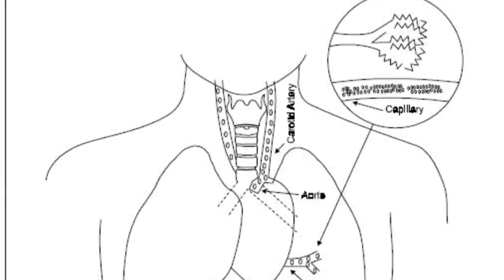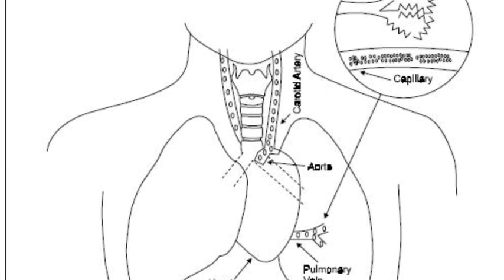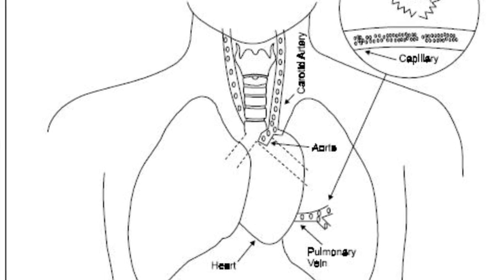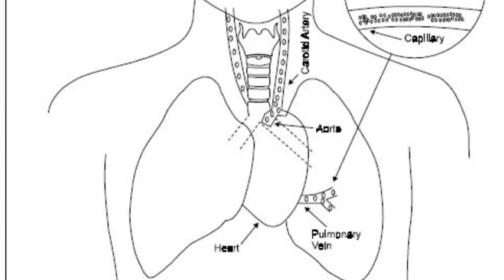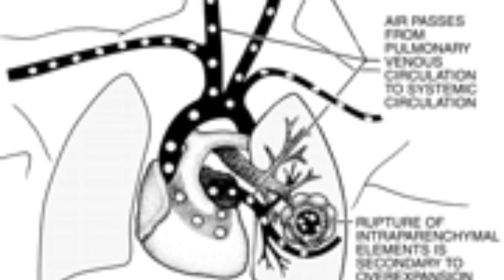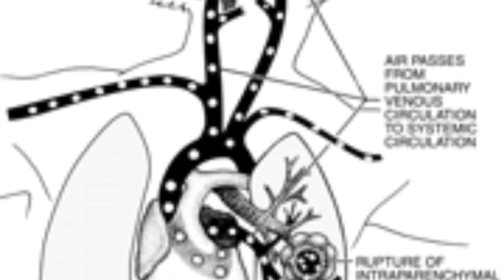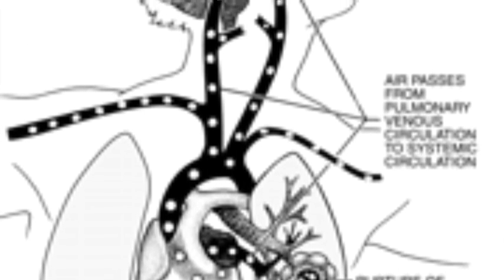AGE results from bubbles entering the lung circulation, traveling through the arteries and causing tissue damage at a distance by blocking blood flow at the small vessel level. This usually happens when a diver surfaces without exhaling. Air trapped in lungs expands with ascent and may rupture lung tissue, called pulmonary barotrauma, which releases gas bubbles into the arterial circulation.